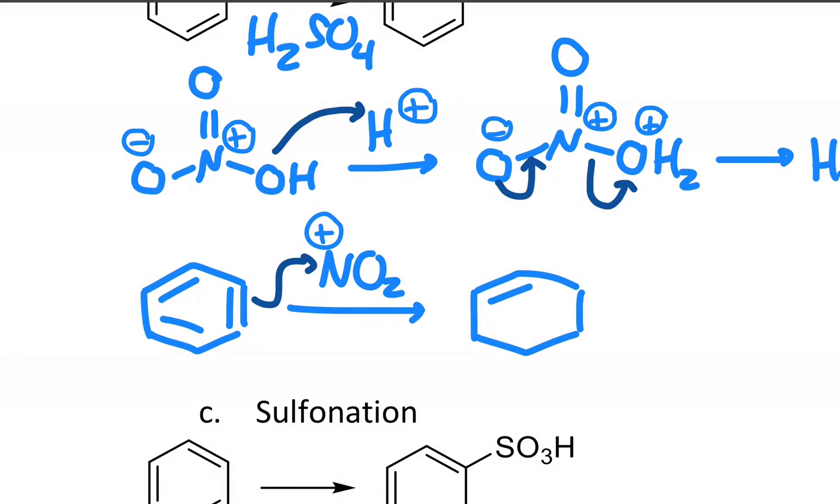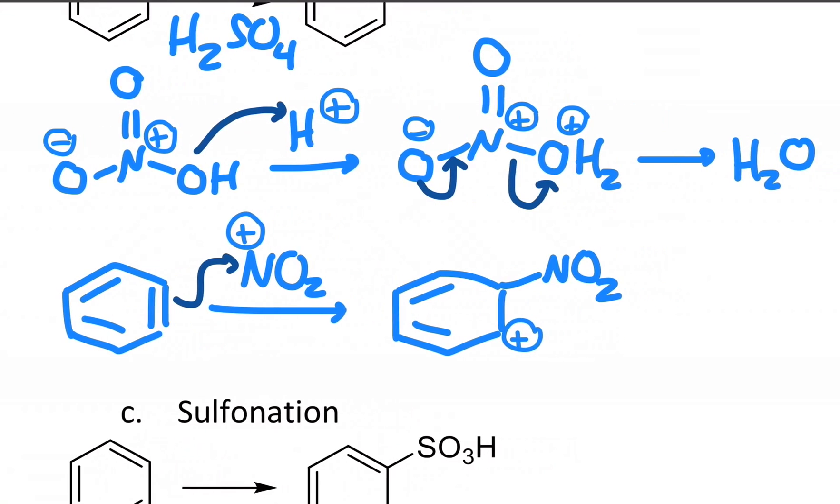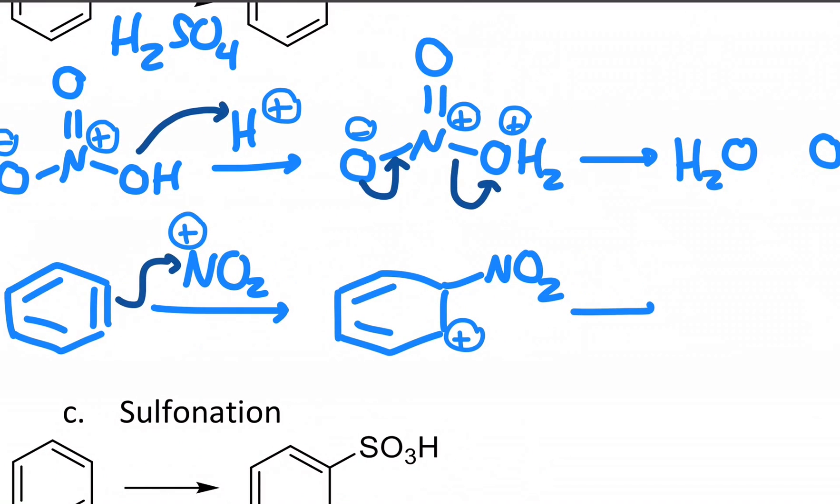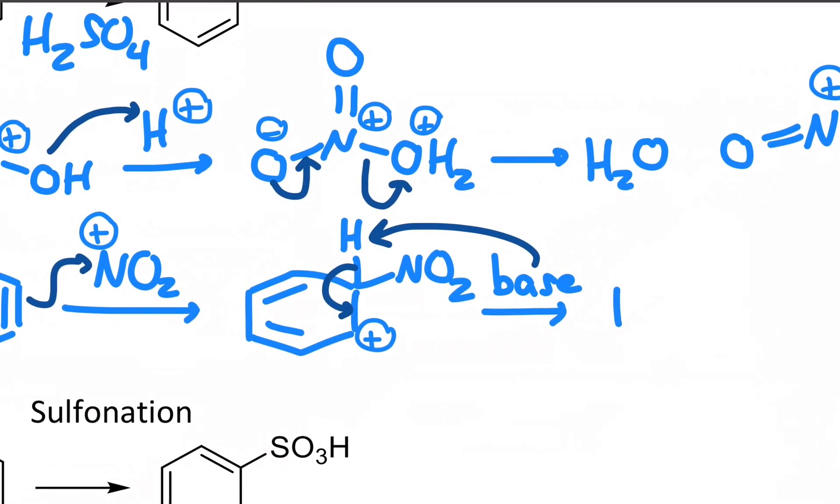Now you'll form a new carbon-nitrogen bond, plus charge on the other carbon on the ring. And as before, I'll just write the generic word base. That base will take away the H and reform the pi bond in the ring, and you reform your aromatic ring.